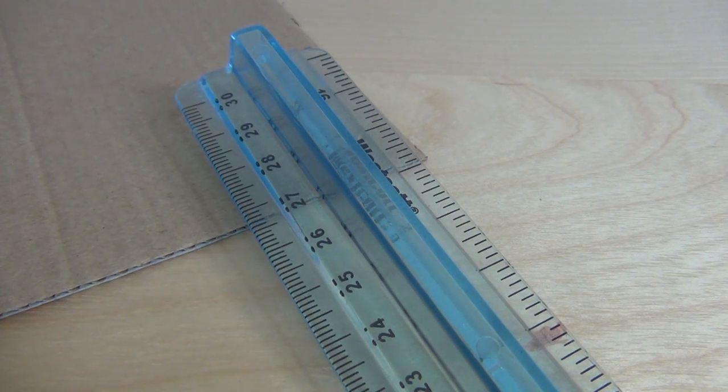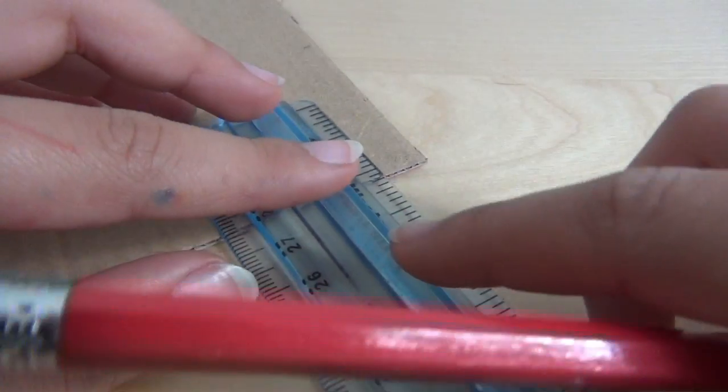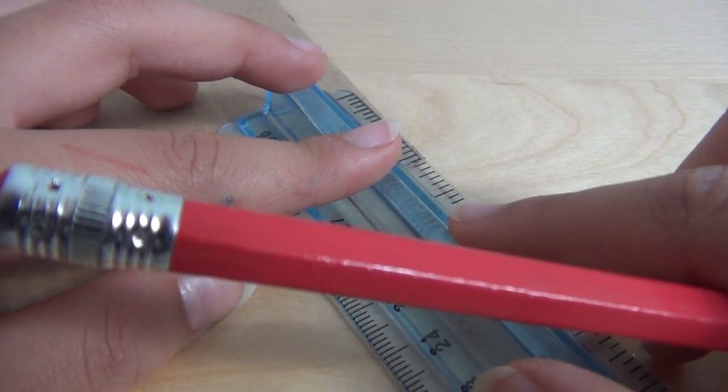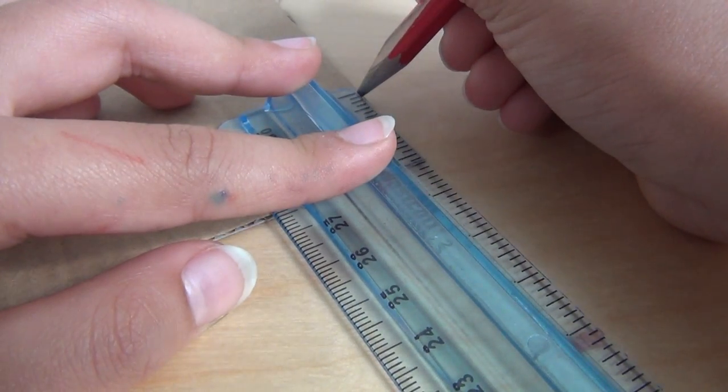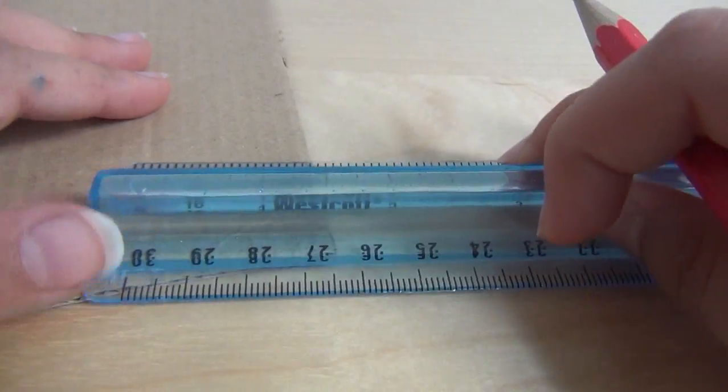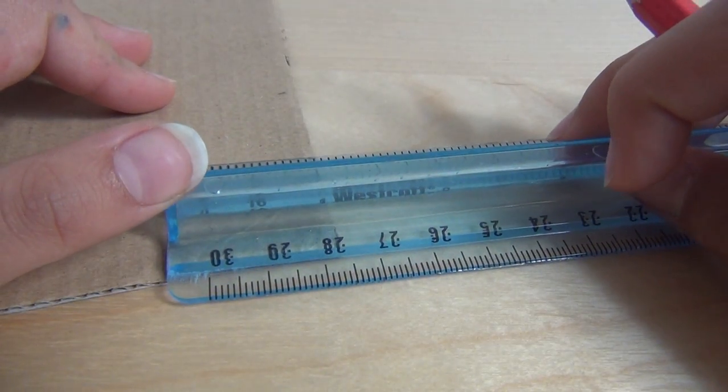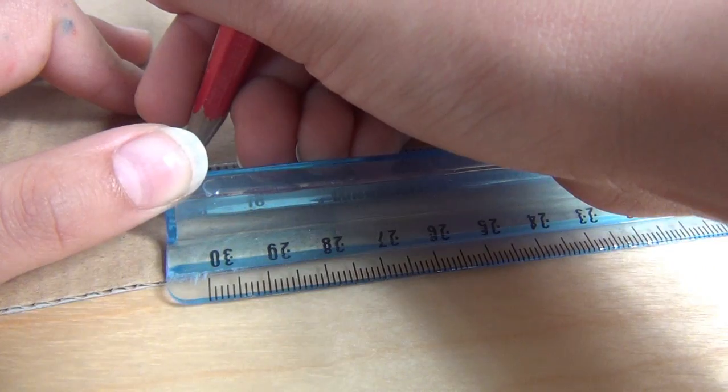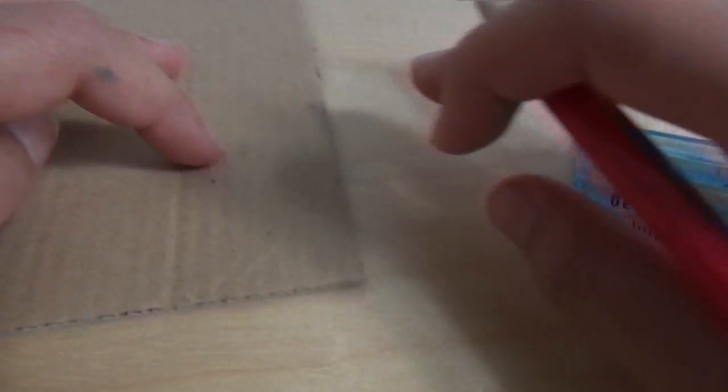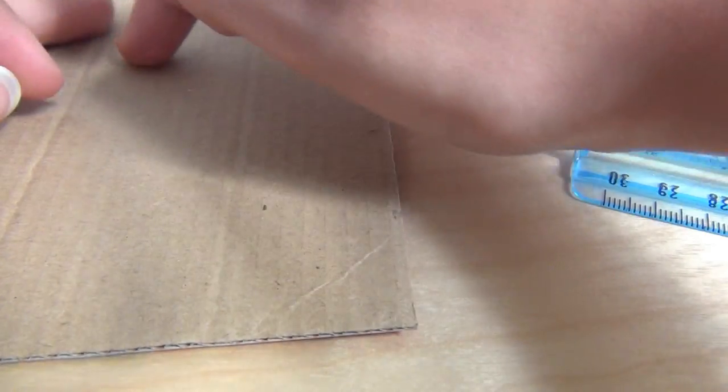Now I'm going to start marking up the shape of the staircase. Using my ruler, I mark one inch up and then one inch in. It should kind of make a zig-zag pattern all the way up.